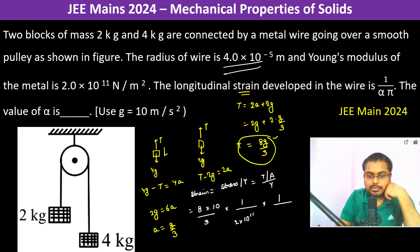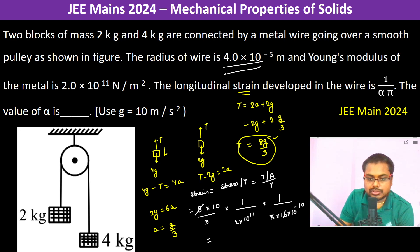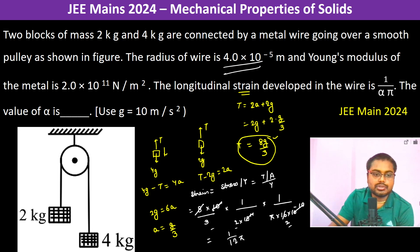The radius of the wire is 4 into 10 to the power minus 5, so the area A equals π into 16 into 10 to the power minus 10. Cancelling terms: 1 by (3 into 2) is 1/6, and 6 into 2 is 12, giving strain equal to 1 by 12π.